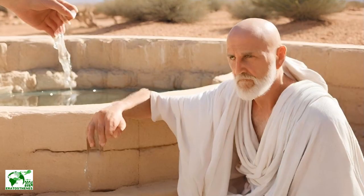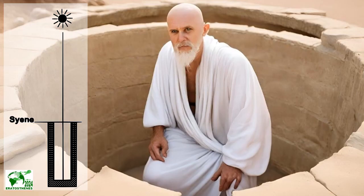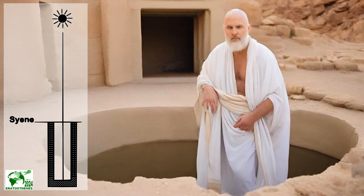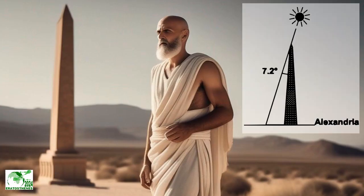In Syene, the sun is at the vertical, so much so that its rays reach the bottom of a well. In Alexandria, on the other hand, the sun is no longer at the vertical and the objects have a very shallow offset shadow.